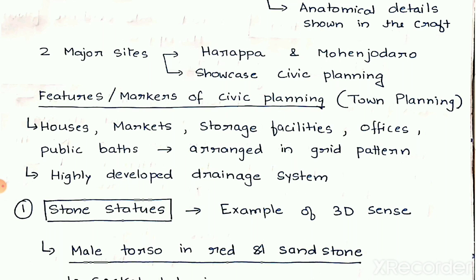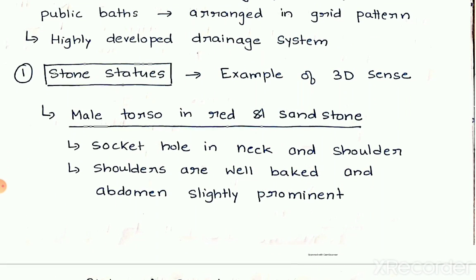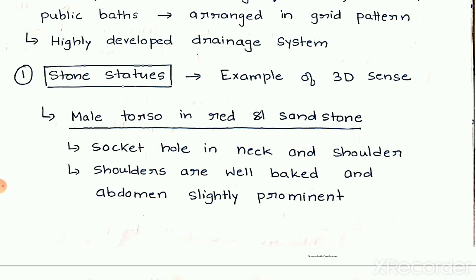The first art form we are going to study is stone statues. Stone statues are a good example of their 3D sense — how they made a 3D object and how the proportion and ratio of size is maintained. Their 3D sense is clearly visible in the statues found in this period. Two important examples are a male torso made of red sandstone and a bearded priest statue made of steatite, a soft stone.